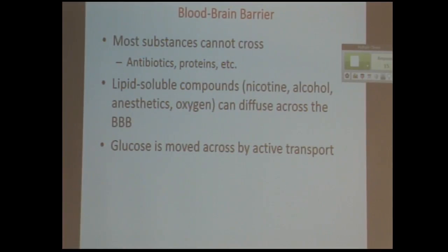So most things can't cross. For example, antibiotics, for the most part, they can't cross. Most proteins cannot. Really, anything that's hydrophilic cannot. So that includes important things like glucose. Glucose can't cross easily. So instead, there's special active transport channels that will take the glucose from the blood and pump it out by the neurons.